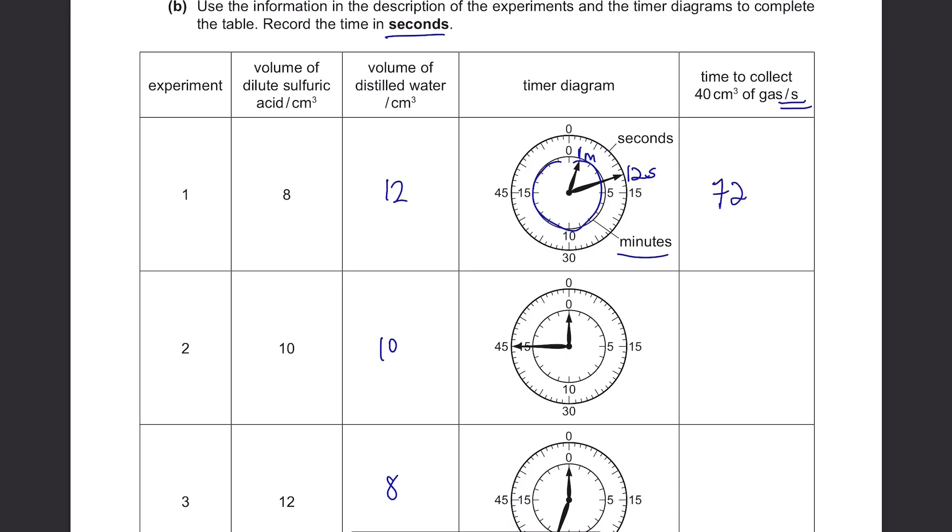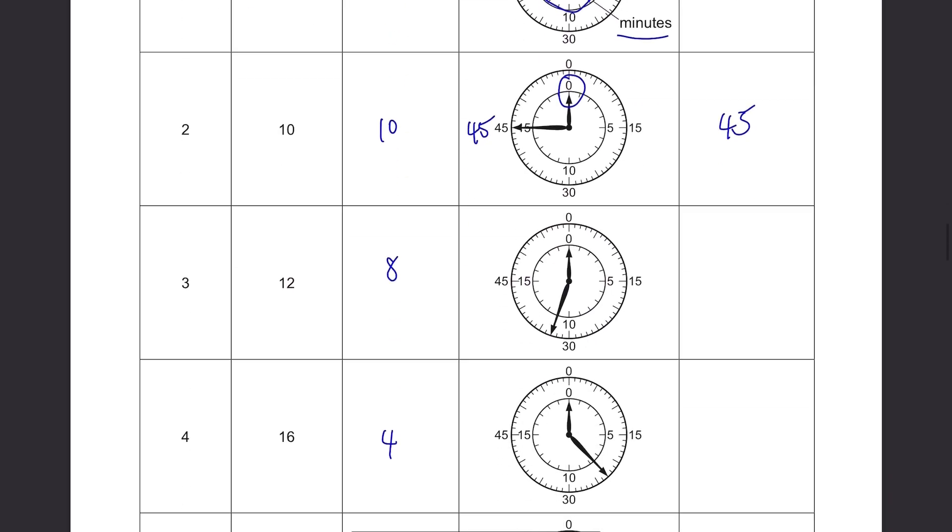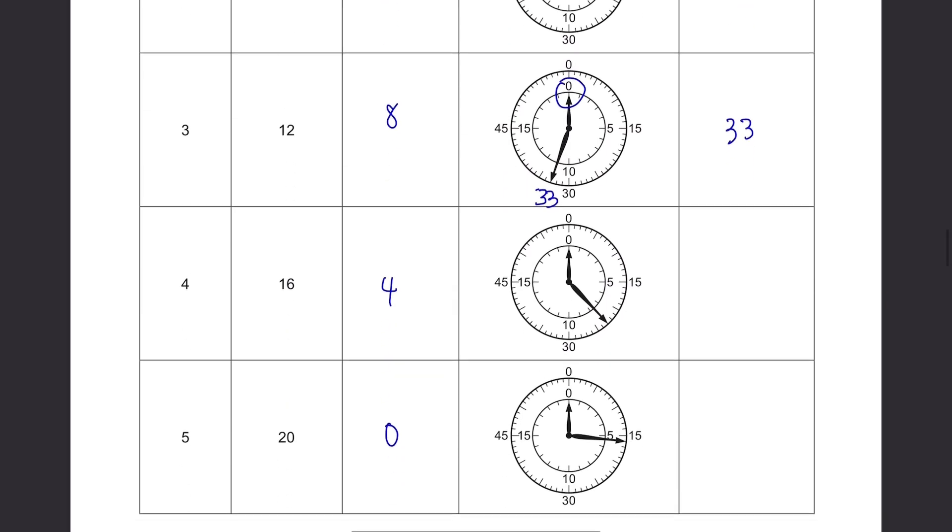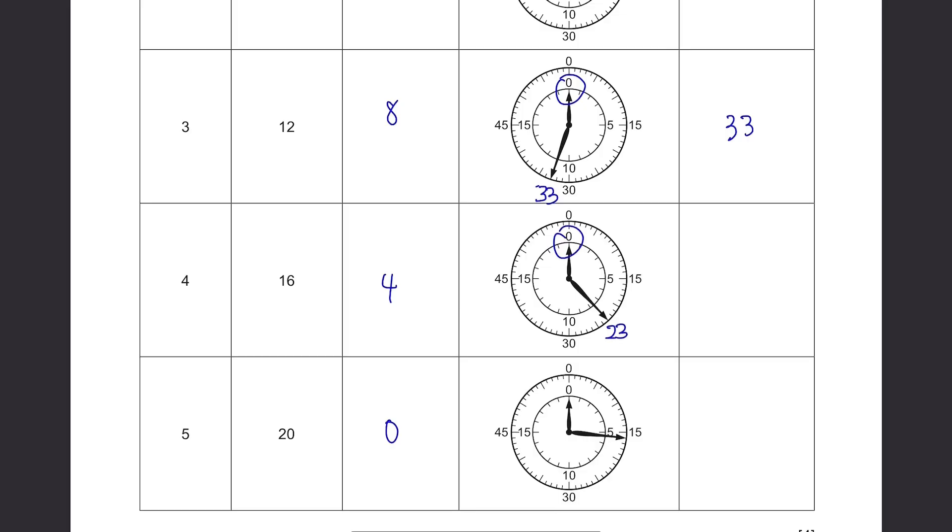Then this needle is pointing to 0. So this is 0 minute. And seconds is in 45. So 45 seconds. And then 0 minute again. This is 33 seconds. So 33. Then 0 minute. 23 here. So 23 seconds. 0 minute again. And 16 seconds.